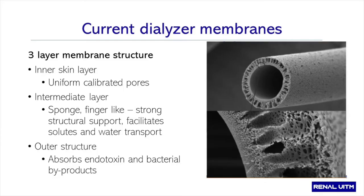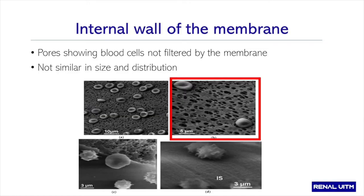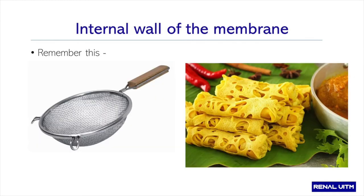The outer layer is designed to prevent bacterial byproducts or endotoxins in the dialysate from entering across into the blood. The surface is very sticky and causes the endotoxins and byproducts to stick to the surface. Looking at the pores on the inner surface of the membranes, it does not look like a perfect flat sheet with beautiful circular holes — I would say it looks like roti jala.